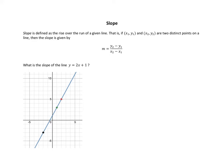In this lesson, we'll go over the definition of slope. Slope is defined as the rise over the run of a given line, and it's governed by this formula, where x1, y1, and x2, y2 are two distinct points.